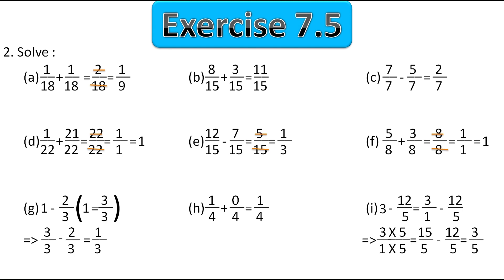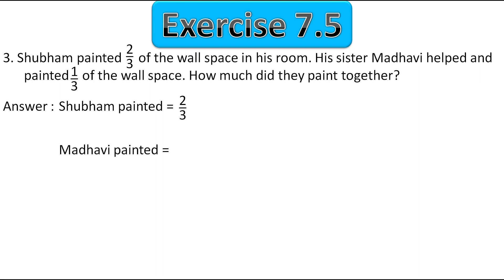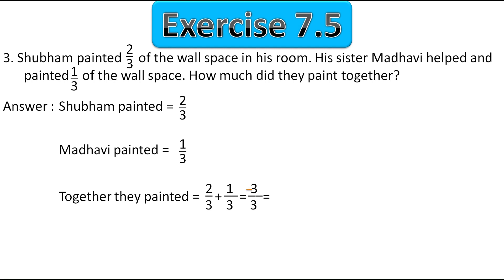Now let's move to the third question. Shubham painted 2 upon 3 of the wall space in his room. His sister Madhavi helped and painted 1 upon 3 of the wall space. How much did they paint together? Together means we have to add these two fractions. Shubham painted 2 upon 3 and Madhavi painted 1 upon 3. Together they painted 2 upon 3 plus 1 upon 3. Both denominators are the same, so we add the numerators: 3 upon 3 equals 1. Together they painted a full wall.